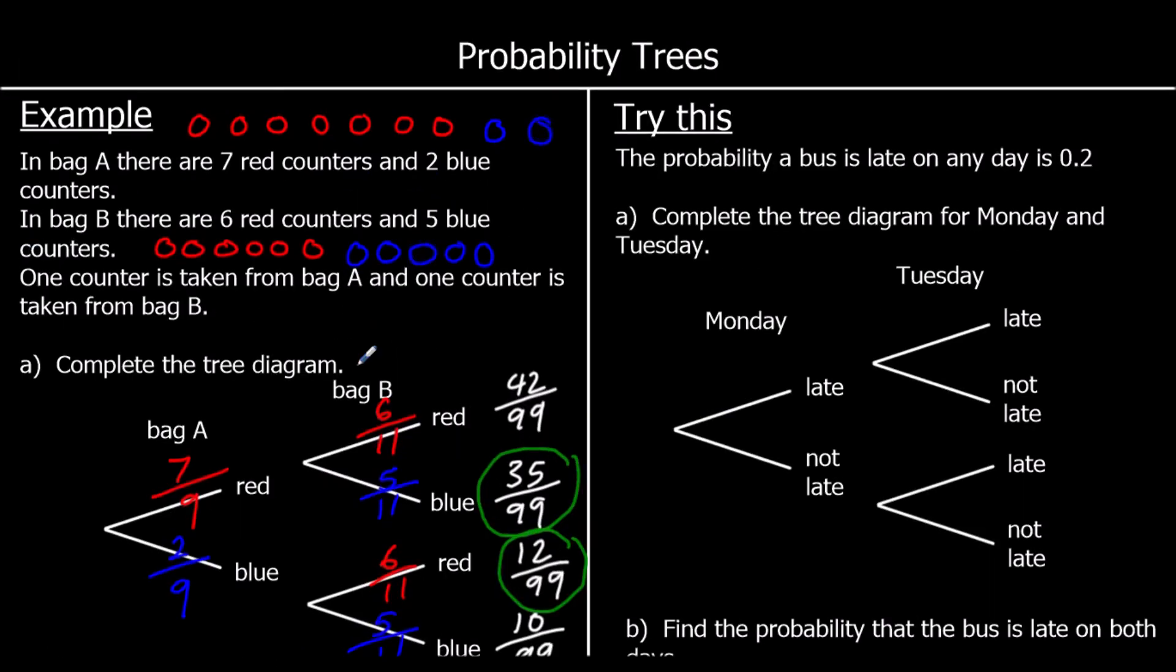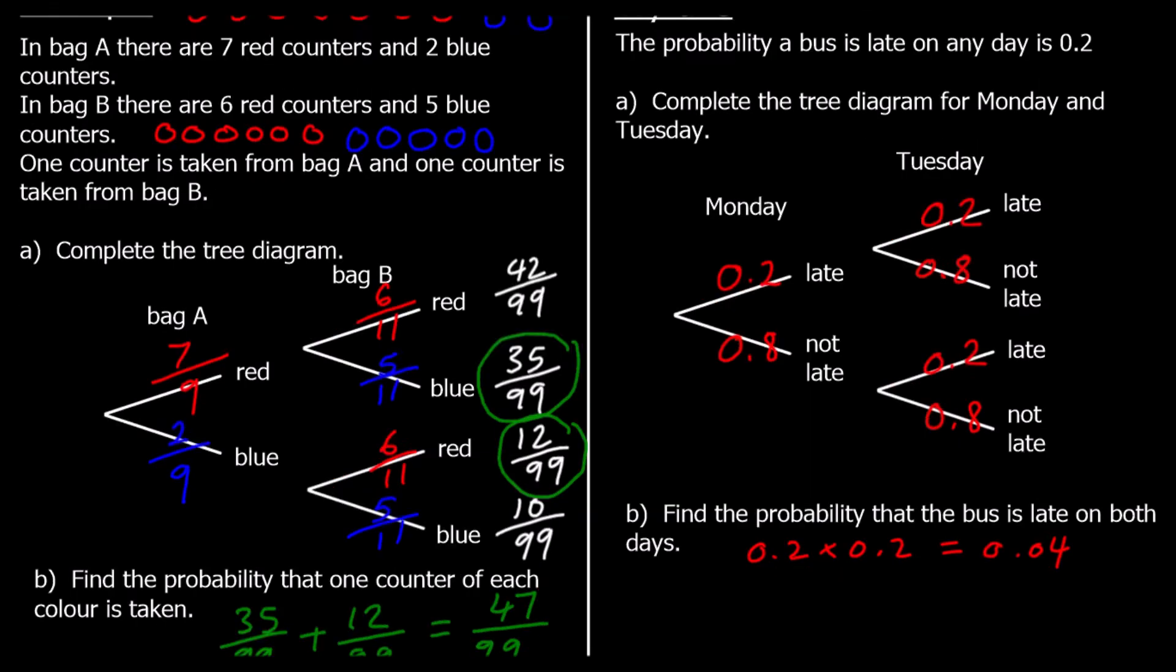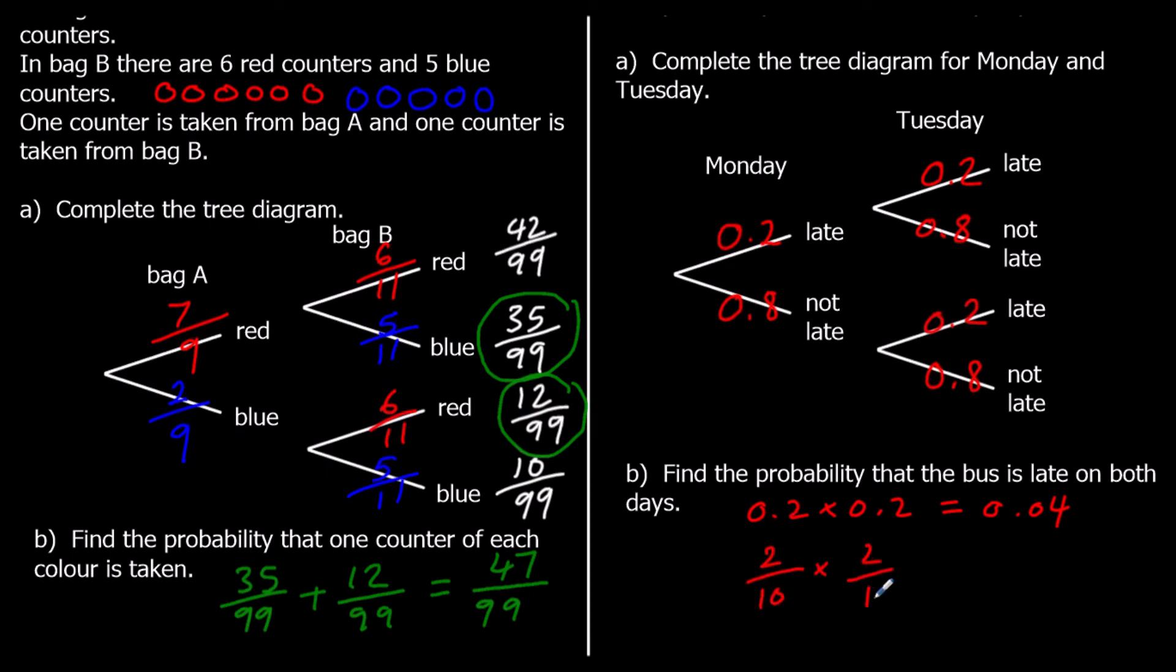And one more question. So we've got the probability of a bus being late is 0.2. Complete the tree diagram for Monday and Tuesday. So the probability of it being late is 0.2 on any day. So the probability of it being not late is 1 minus 0.2, which is 0.8. It can even be late or not late. So those probabilities have to add up to a whole. The question says find the probability it's late on both days. So we times across the branch. So it's 0.2 times 0.2. 0.2 times 0.2 is 0.04. And if you preferred, you could have changed them to fractions. Two tenths times two tenths, you would have got four one hundredths. It's the same thing.